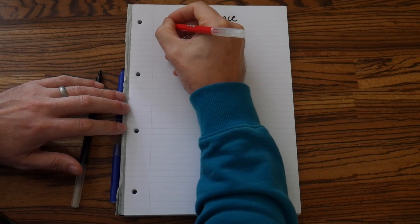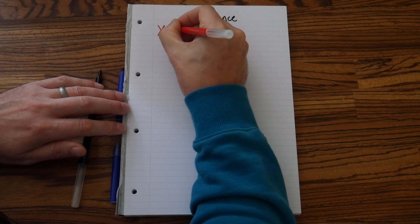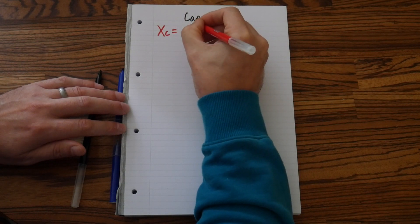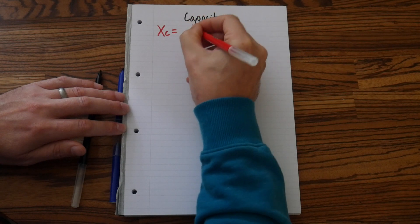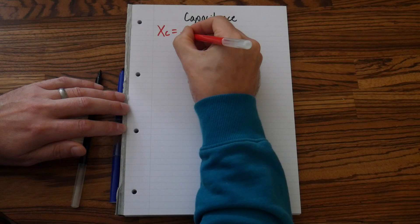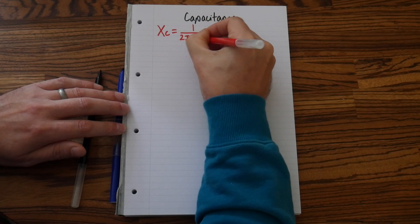So let's get our red pen for formulas. And the first one is going to be Xc equals, and that is 1 over 2πfc.